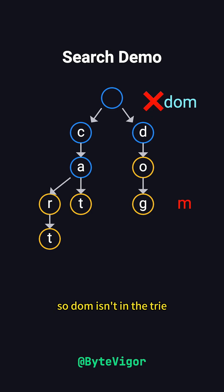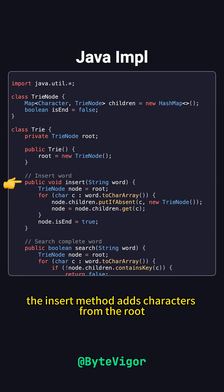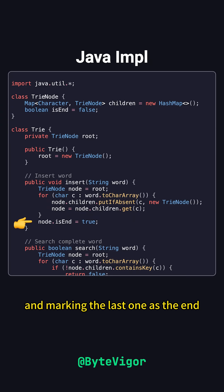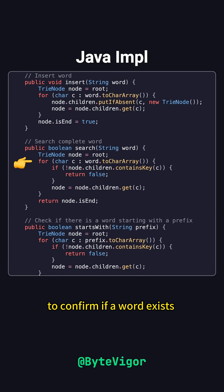A Java implementation of a trie typically uses a TriNode class with a hash map for children and a boolean isEnd to mark the end of words. The insert method adds characters from the root, creating nodes as needed and marking the last one as the end. The search method traverses the tree to confirm if a word exists and ends at a valid node.